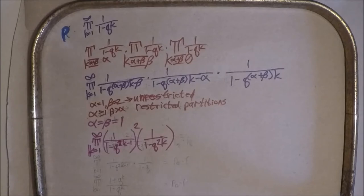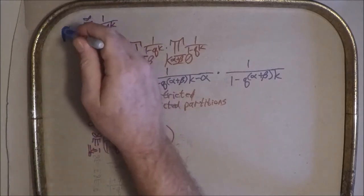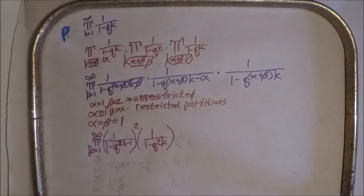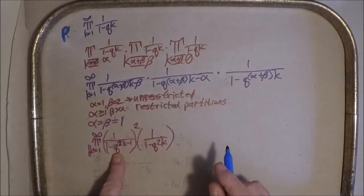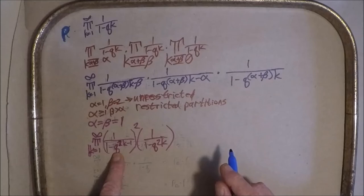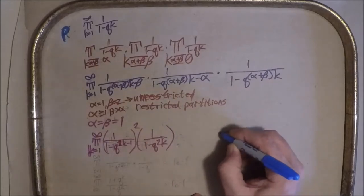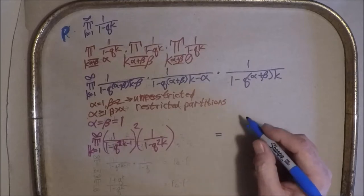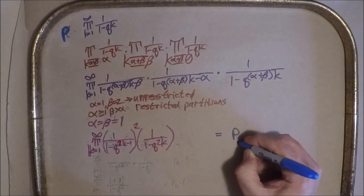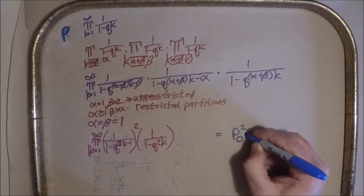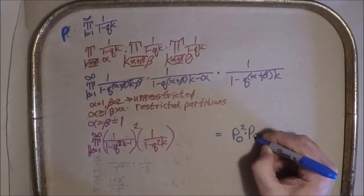And if we're thinking in terms of our funny symbols here, notice that this is partitions into odd parts and this is partitions into even parts and that's squared. So sequence or generating function wise, this is also equivalent to P O squared dot P E.